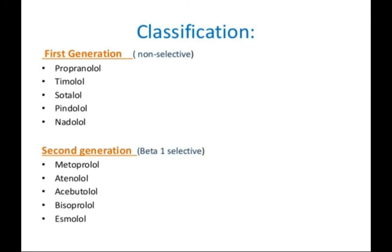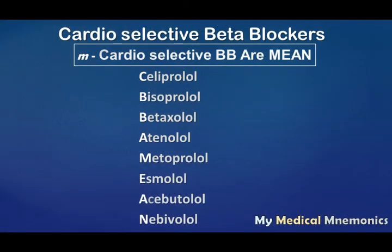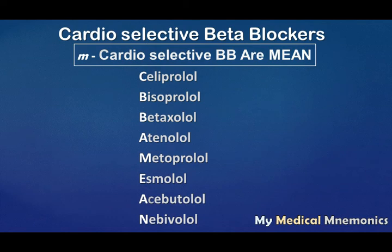There are a total of eight cardio selective beta blockers. To remember these eight drugs, there is a very simple and funny mnemonic: 'Cardio Selective Beta Blockers ARE MEAN.' The word 'SELECT' tells you the first drug — celiprolol. Then 'B' from beta and 'B' from blocker give you bisoprolol and betaxolol.